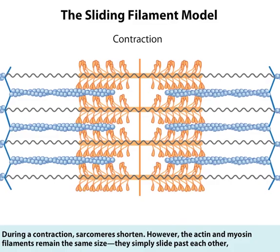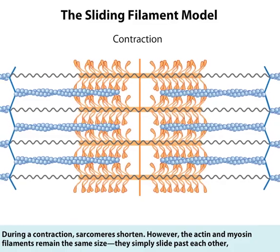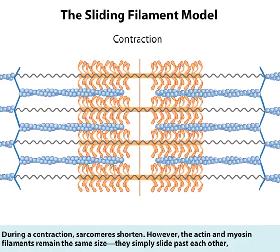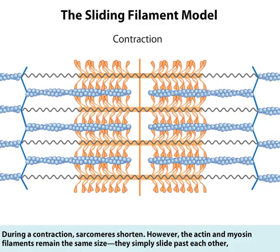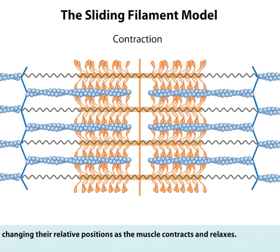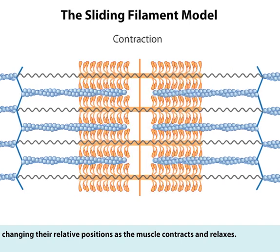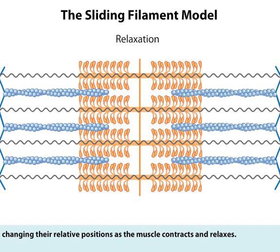During a contraction, sarcomeres shorten. However, the actin and myosin filaments remain the same size. They simply slide past each other, changing their relative positions as the muscle contracts and relaxes.